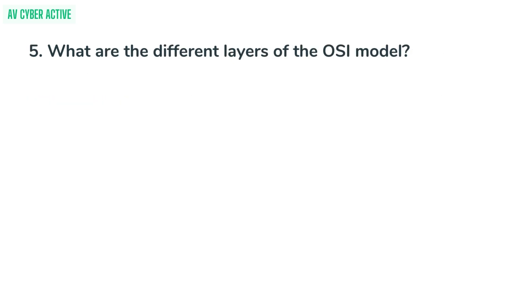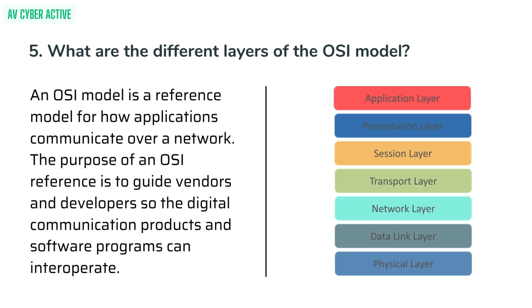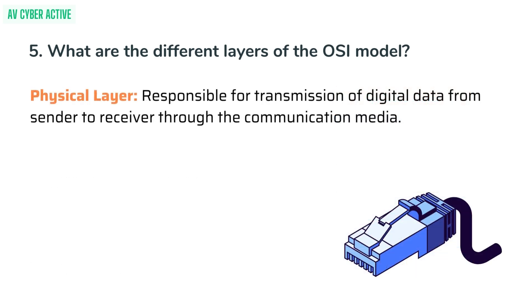Question 5: What are the different layers of the OSI model? The OSI model is a reference model for how applications communicate over a network. The purpose of an OSI reference model is to guide vendors and developers so that digital communication products and software programs can interoperate. The OSI layers are as follows.